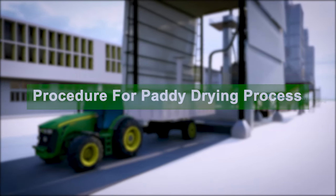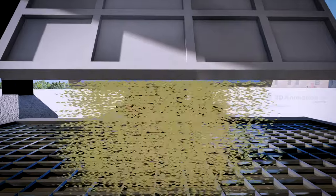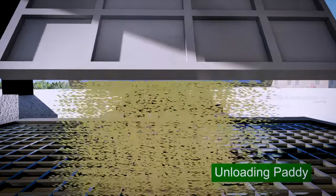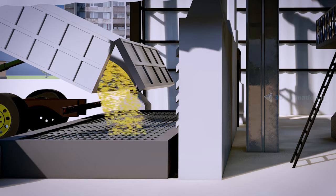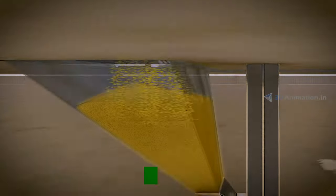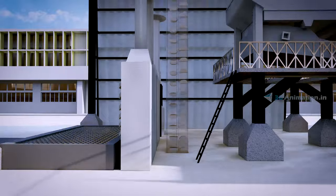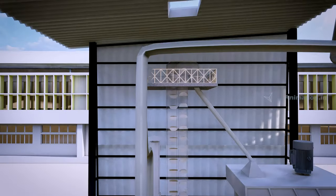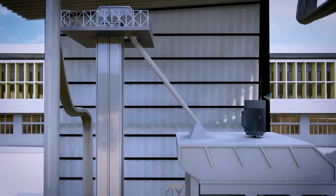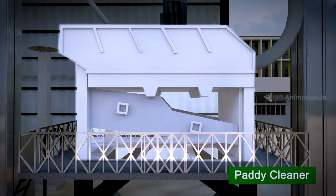Harvested paddy is unloaded from vehicle. Operation starts with deposition of harvested raw paddy in gorge. Harvested paddy is discharged through feeder elevator to paddy cleaner.